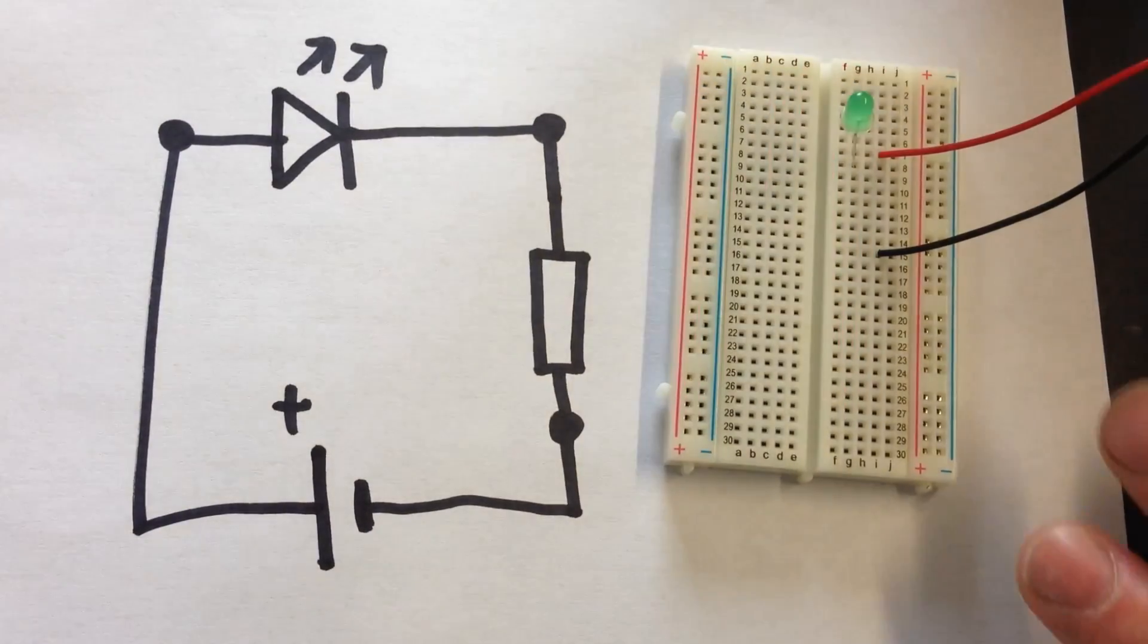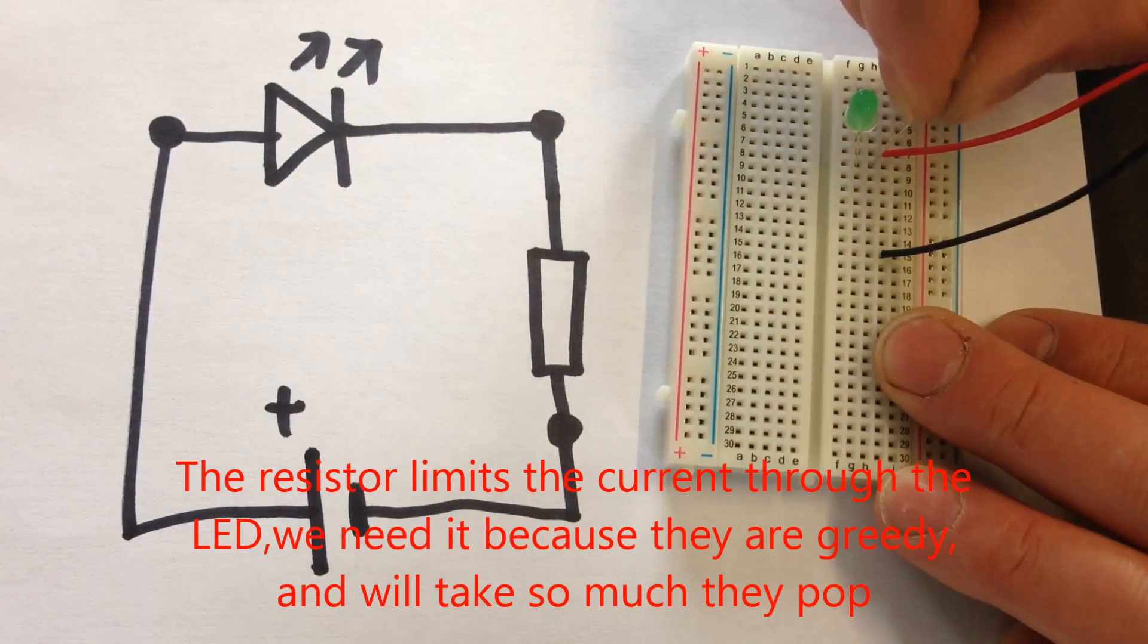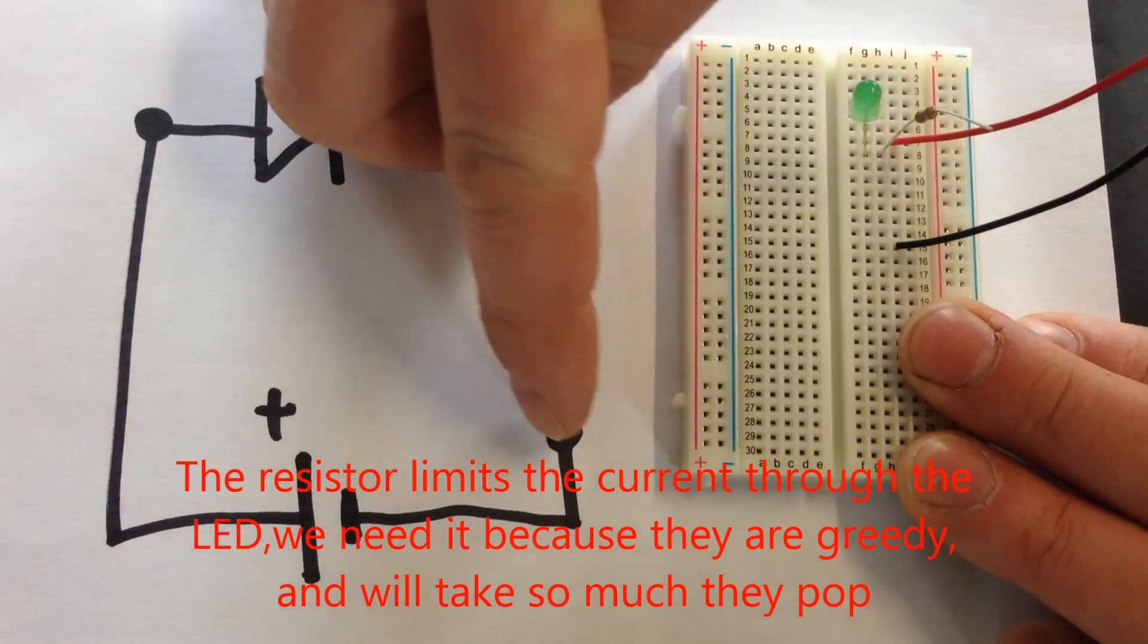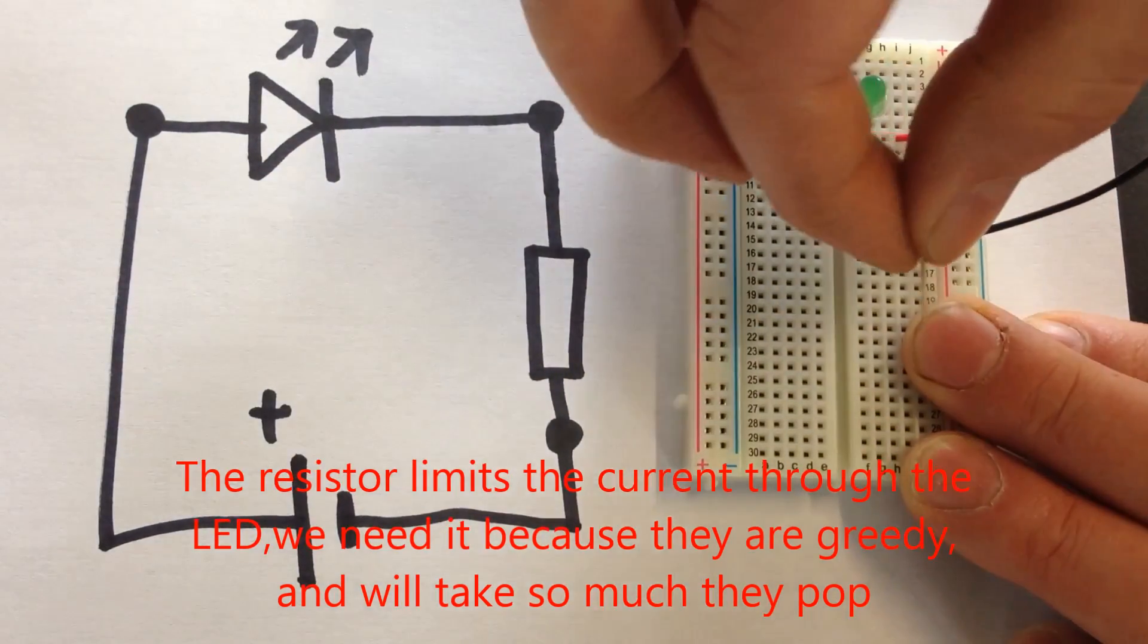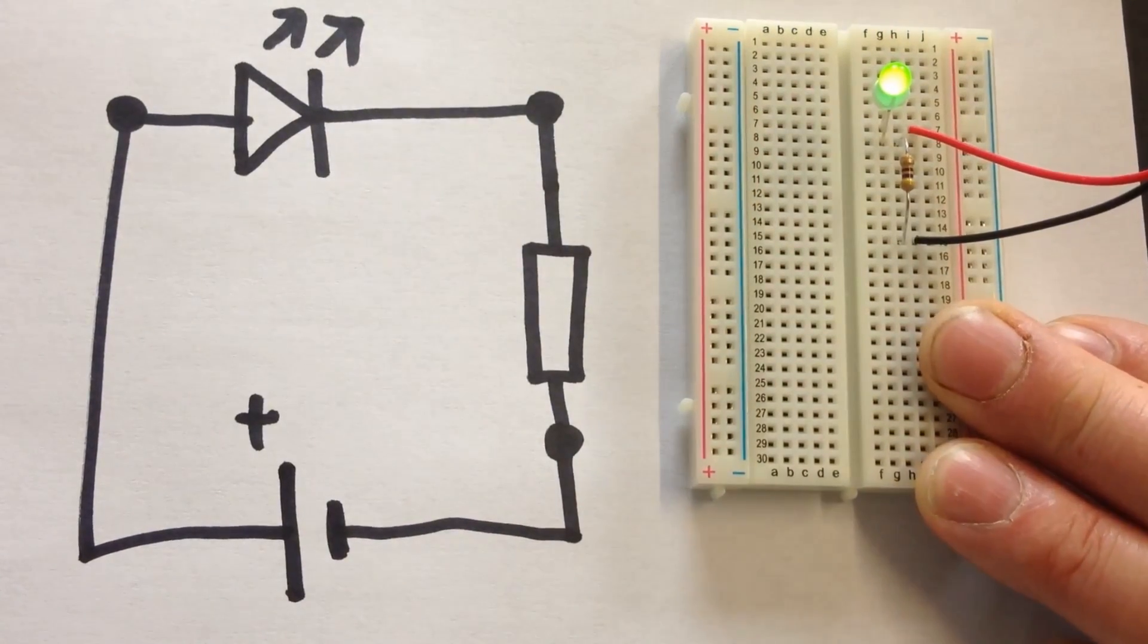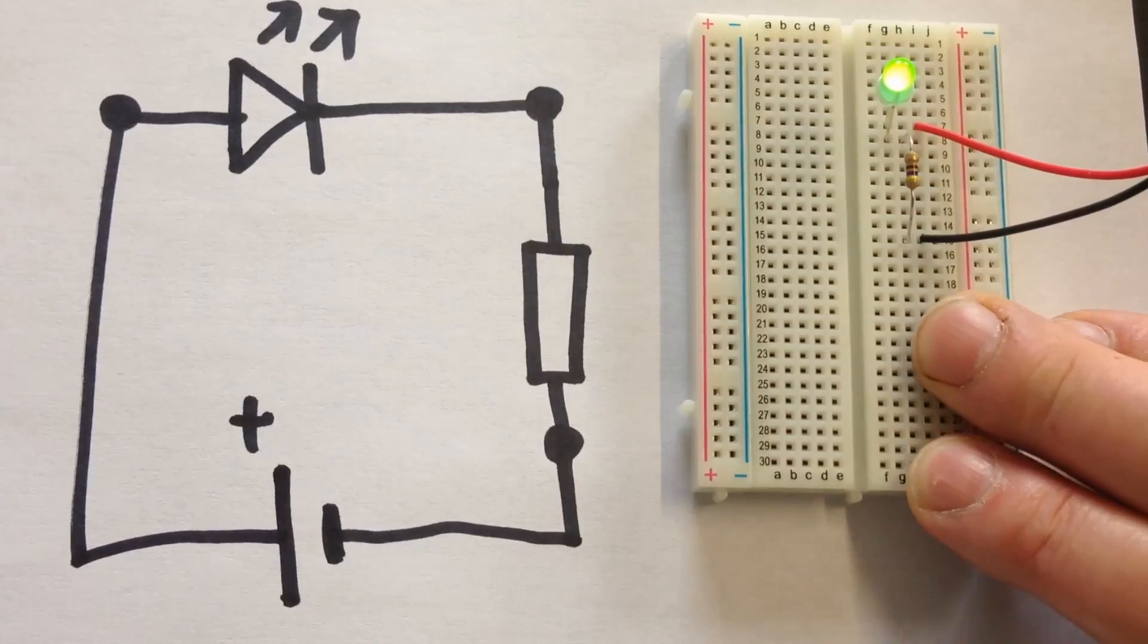Now we're at this point. So this side of the LED is connecting to one side of our resistor, and the other side of the resistor connects to the minus of the battery. And here presto, we've got a lit LED.